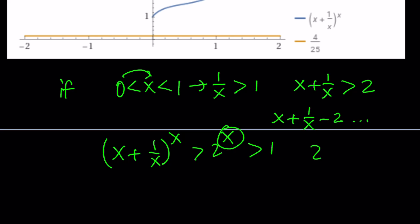Obviously, as x approaches infinity, we can say that this approaches 0, but it's always going to be greater than 1. Therefore, it can never equal 4 over 25, which means we have no solutions. So that means x cannot be between 0 and 1.